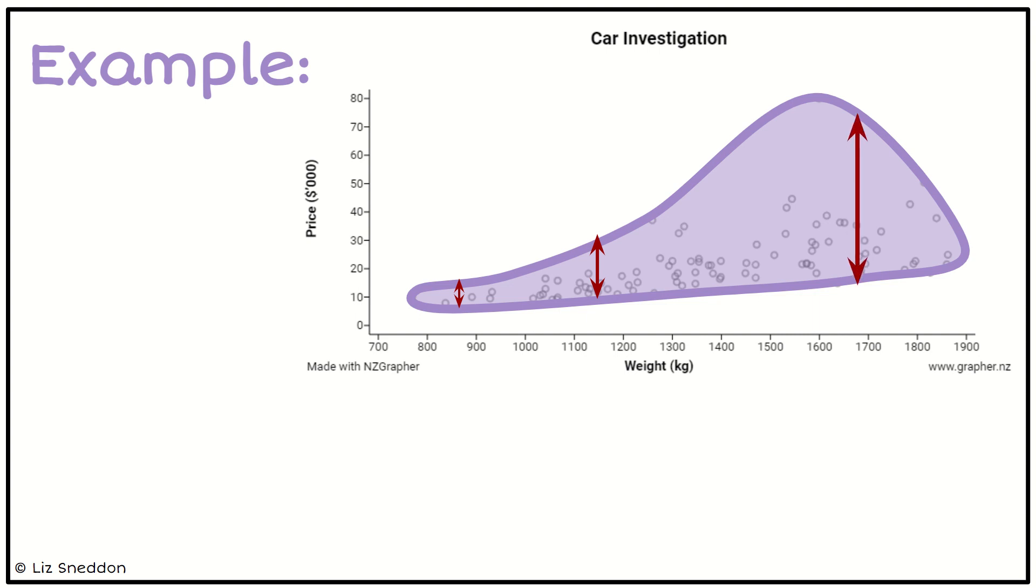When I get to cars that weigh between 1600 to 1800, there's a lot more variation in their price. So in this case we have a fan effect, or the variation increasing as the weight increases.